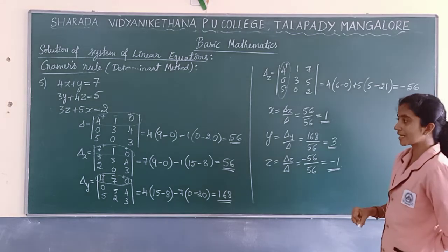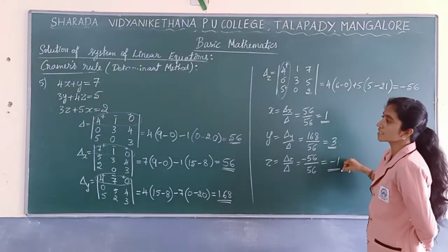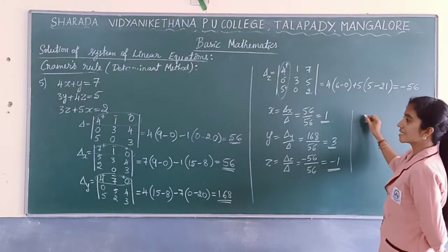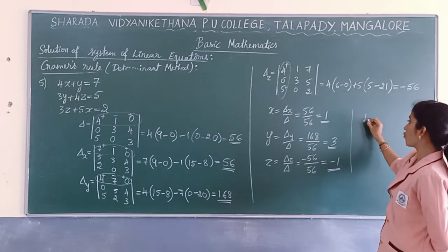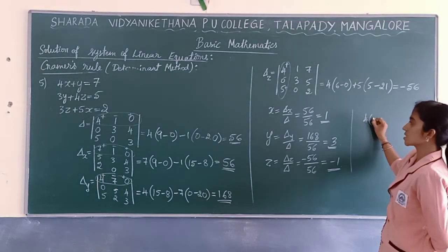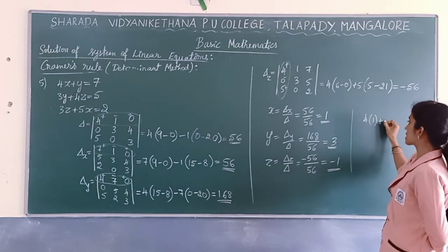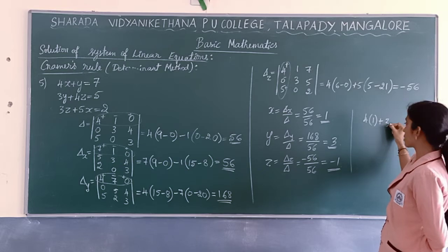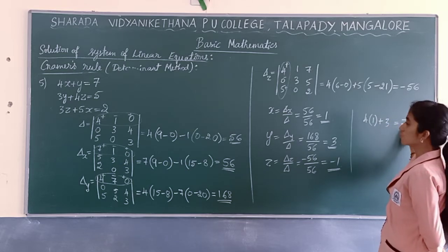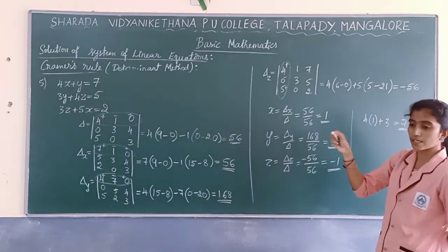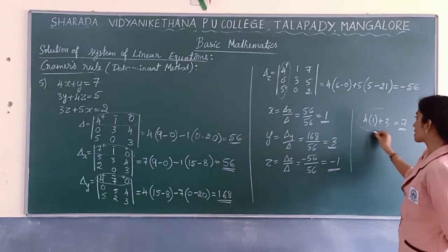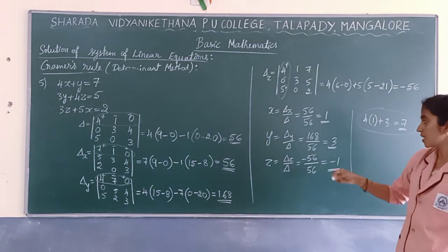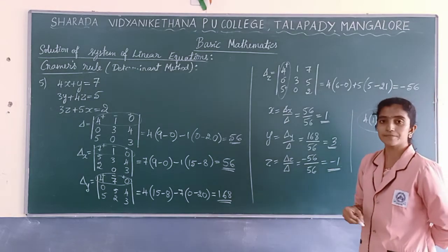Now check whether the answers are correct. Verify with the first equation: 4×1 + 1×3 = 4 + 3 = 7. That is correct. This verification step is important — always substitute the values back and confirm.